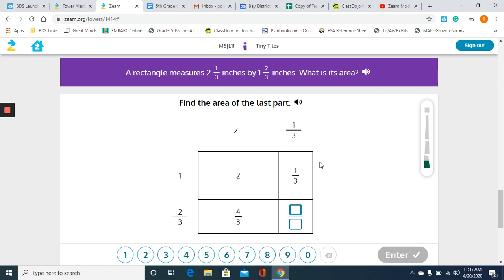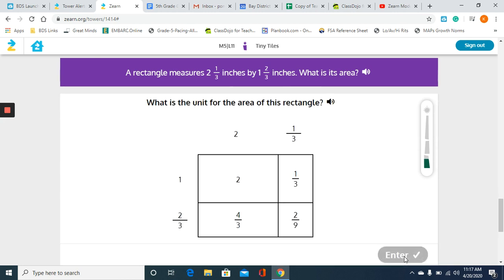And then our final fraction, we have 2/3 times 1/3. So 2 times 1 is 2, 3 times 3 is 9. Remember when we're multiplying fractions, you multiply numerator times numerator, denominator times denominator.